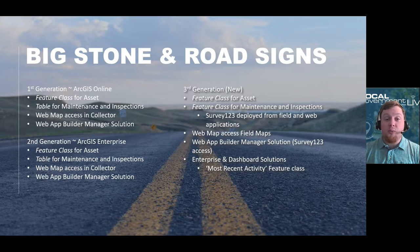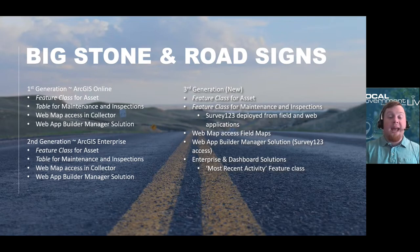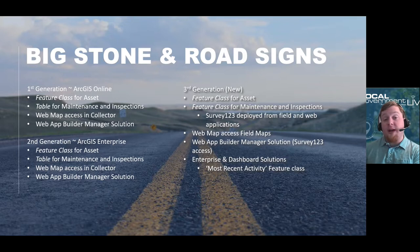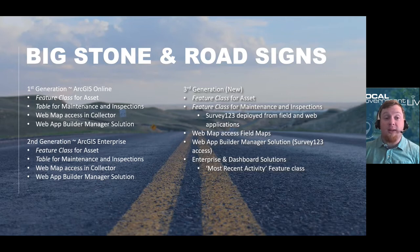The second generation was when Big Stone County took everything that was part of that system and moved it over into ArcGIS Enterprise. All of that data from ArcGIS Online was moved into Enterprise, putting it behind a secure firewall. Users now log into the Portal for ArcGIS rather than ArcGIS Online directly, but they still had the same deployment of Collector and the manager solution that existed in the first generation.